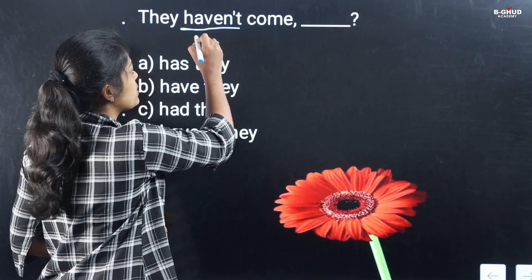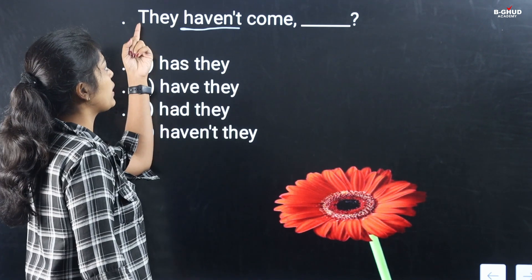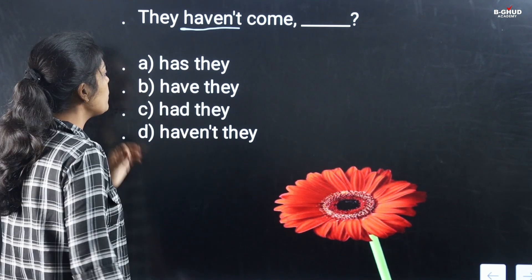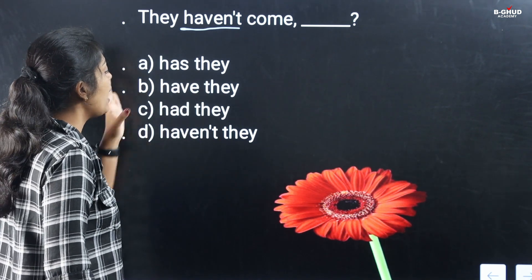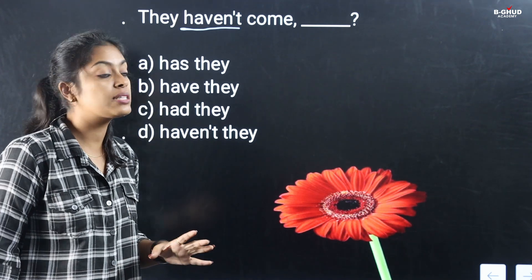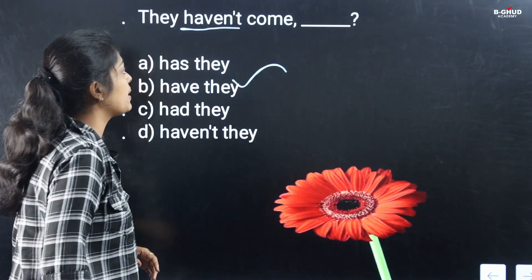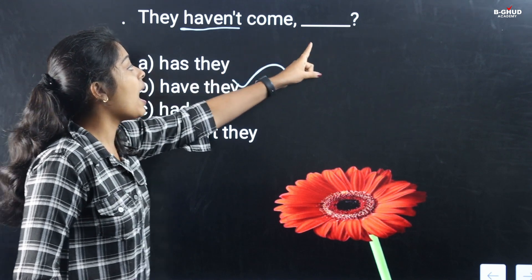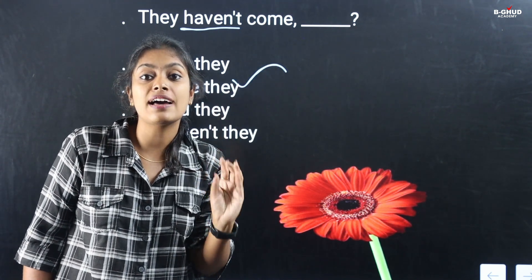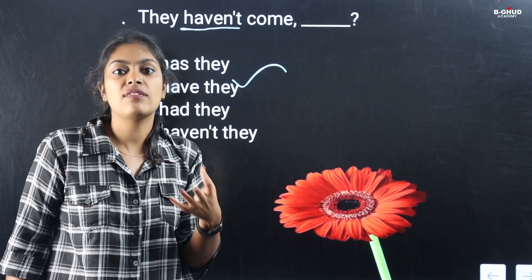How do you say it? The auxiliary verb is 'have not'. Since 'have not' is negative, the question tag must be positive — that means 'have'. So the answer is: 'They have not come, have they?'